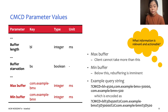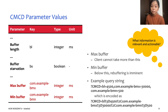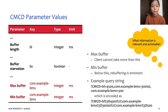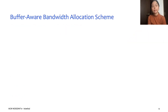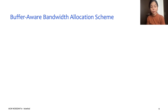Note that our POC system targets a very specific scenario using a relatively simple application, so we only require these four CMCD parameters for now. That said, there are many other available parameters defined in the spec that could be used in different applications. Since we use buffer information in our approach, we name it the buffer-aware bandwidth allocation scheme.